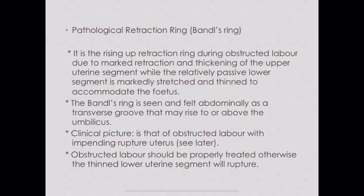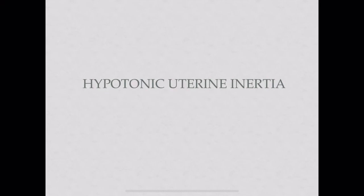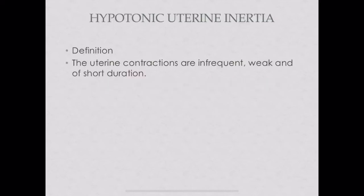Next under inefficient uterine action is hypotonic uterine inertia. In this condition, uterine contractions are infrequent, weak, and of short duration. Infrequent means there is no proper pattern — contractions may come every 5, 15, or 20 minutes. Weak intensity means mild contractions lasting only 5 to 10 seconds.